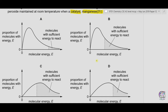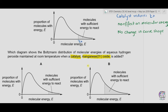Looking at the options A, B, C, and D: in A and B the shape of the curve does not change, while in C and D the curve has shifted forward, implying a temperature change — so C and D are not the answer. Comparing A and B: in A, the activation energy has not changed. In B, the activation energy has decreased, meaning more molecules can be converted into product. The correct option is B.